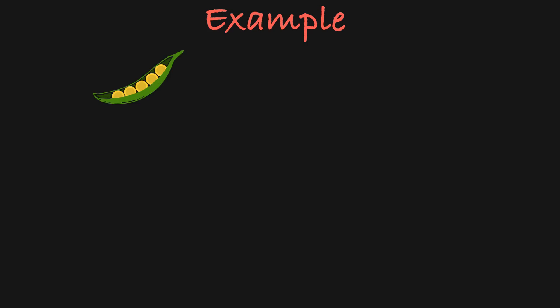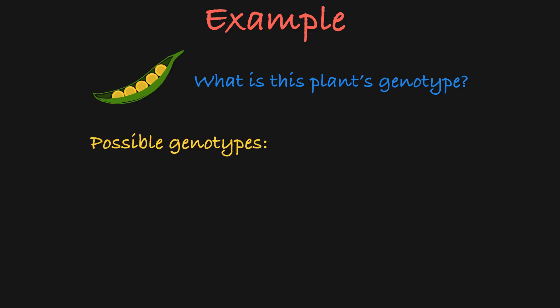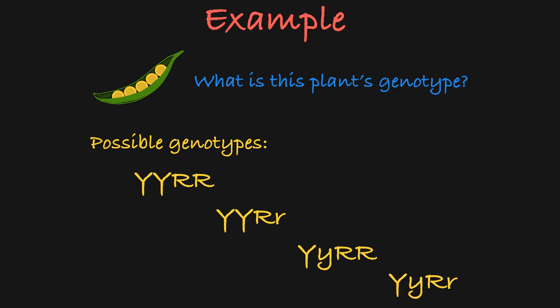In this case we have a pea plant producing round pods and yellow peas, and we want to know its genotype. There are four possibilities for its genotype: it could be homozygous dominant for both genes, it could be homozygous for the pea color gene and heterozygous for the pod shape gene, it could be heterozygous for the pea color gene and homozygous for the pod shape gene, or it could be heterozygous for both genes.